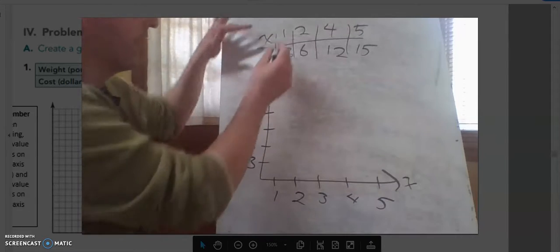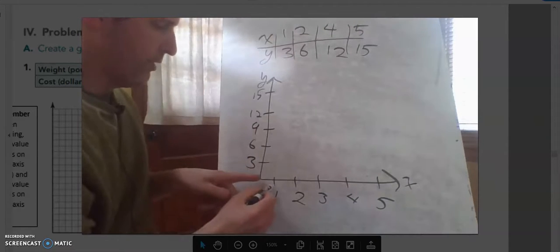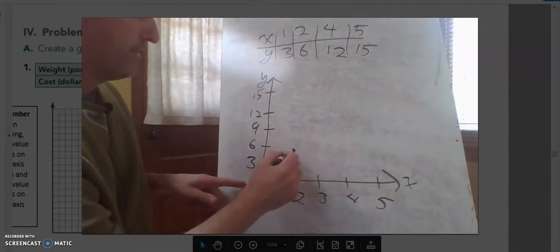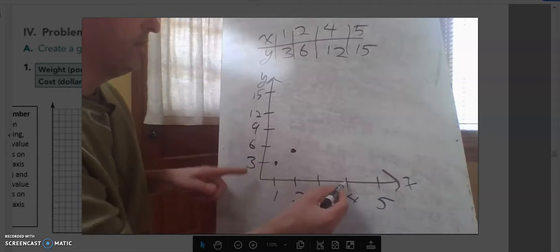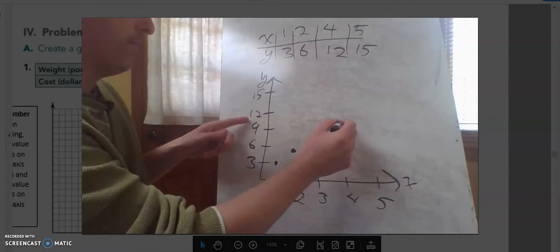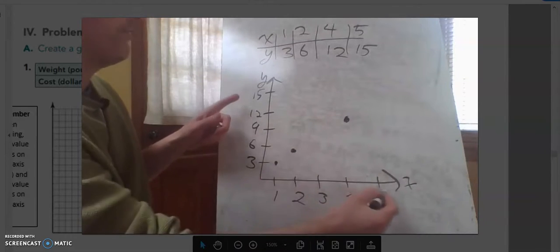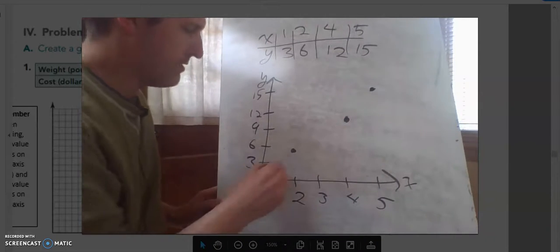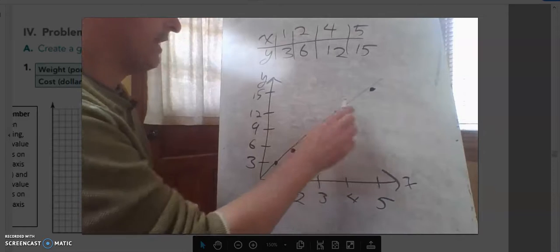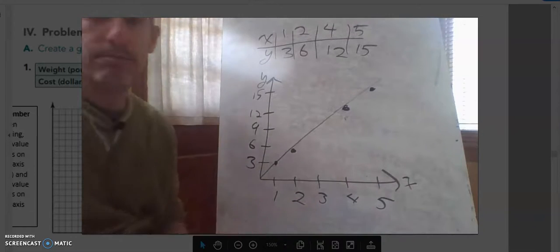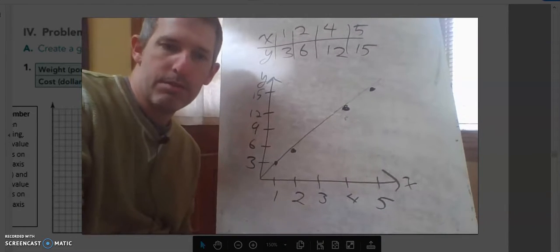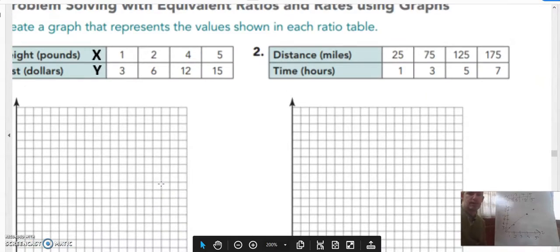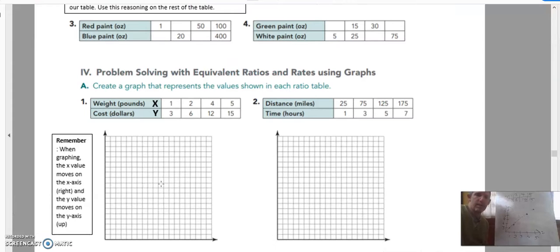Now we need to graph. We've got our one, three. So I go over one and I go up three and I put a point there. We go over two and I go up six. I put a point right there, go over four and then 12. Put a point right there and then go over five and 15. Put a point right there. Now, again, these are not exact, but you can kind of see a trend line for me here. So that's pretty close. I don't think there's anything else that we needed to do there just to graph. So I think you guys can get that one.